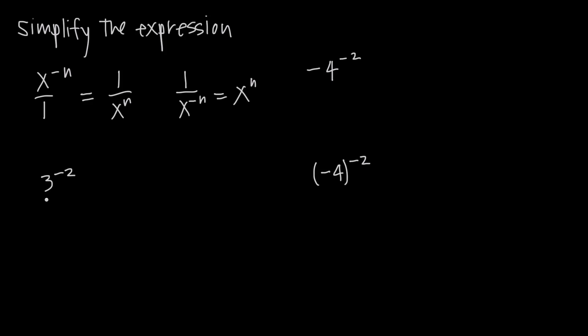here we have 3 to the negative 2, remember that this is the same as 3 over 1. So this is then going to become 1 over 3 to the positive 2. We just moved it to the denominator and change the sign from negative to positive on the exponent. And we know that 3 squared is 3 times 3, which is 9, so we get 1 over 9. So 3 to the negative 2 is the same as 1 ninth.